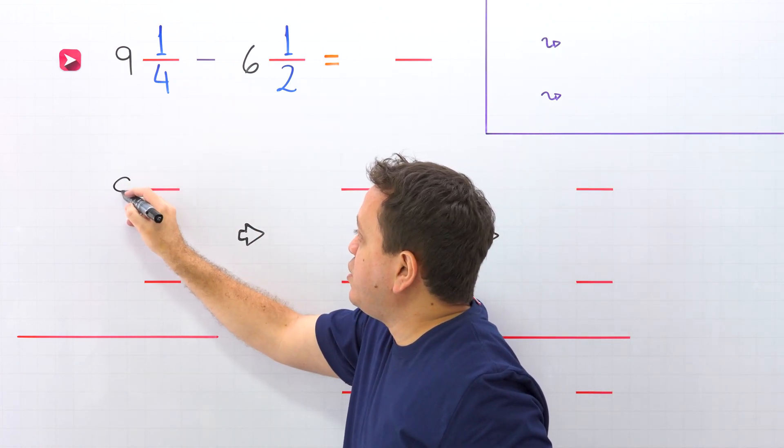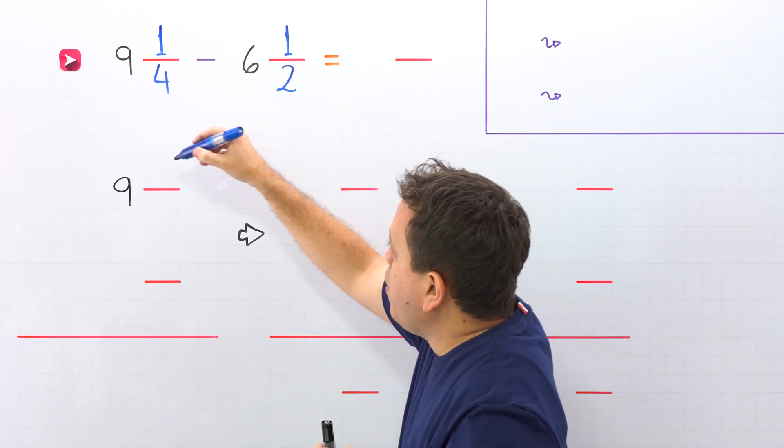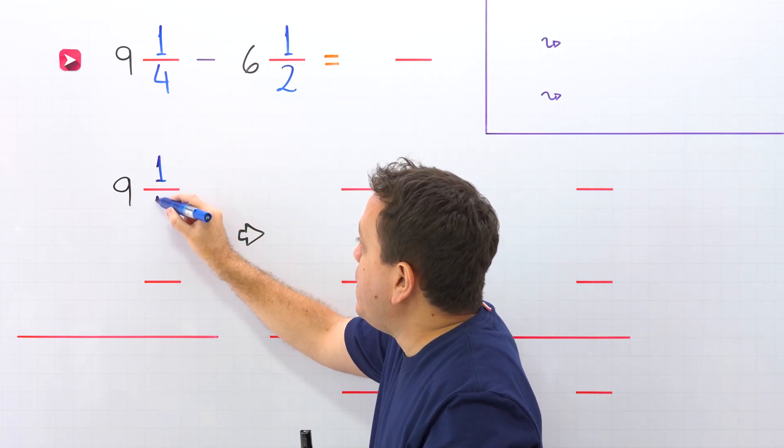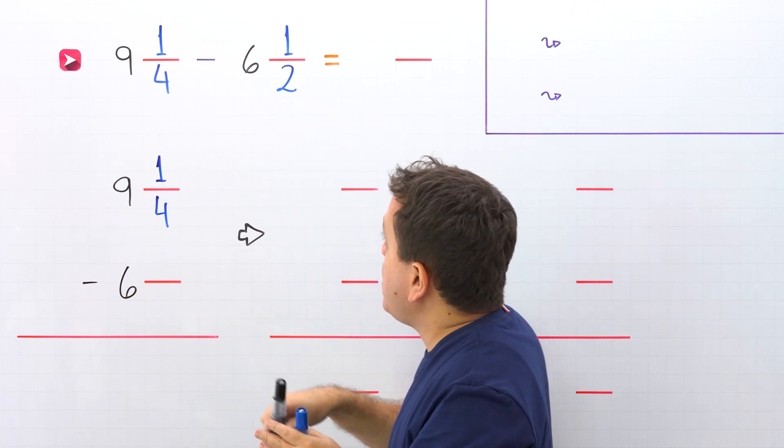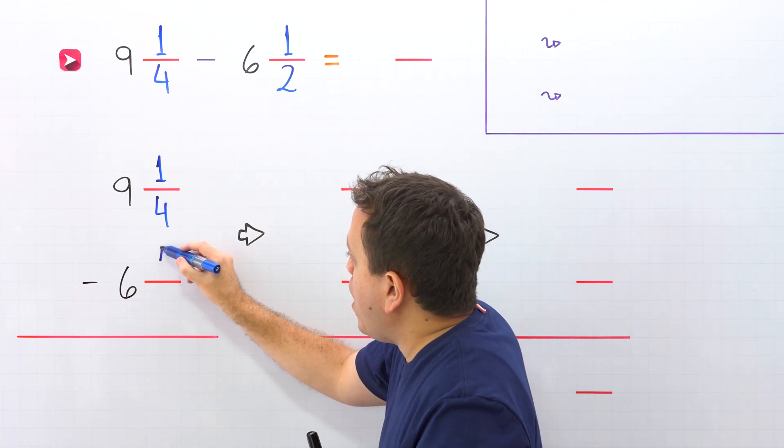We put the first mixed number, that is 9 and 1 fourth. Then, we have the minus sign and the second mixed number, that is 6 and 1 half.